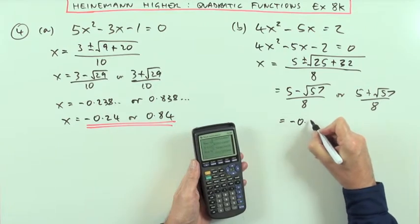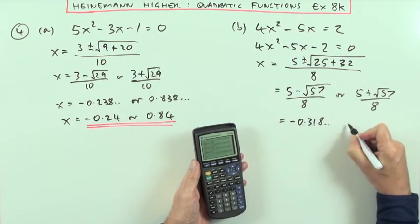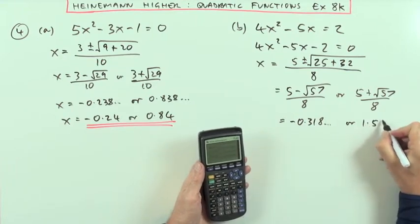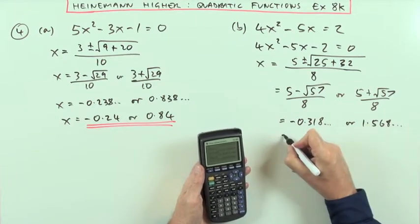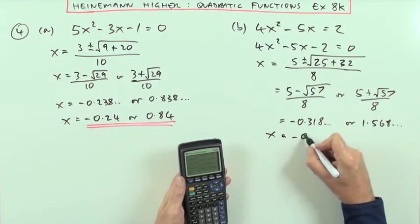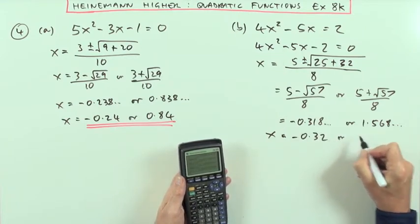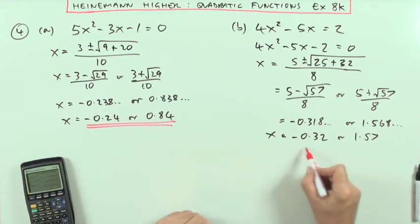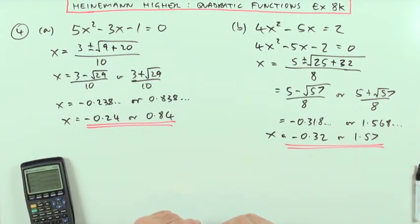So I've either got negative 0.318 and so on, or 1.568 and so on, which means x is either equal to negative 0.32 or 1.57. It's just using the quadratic formula.